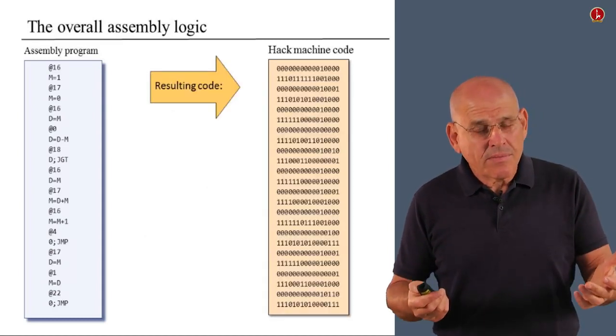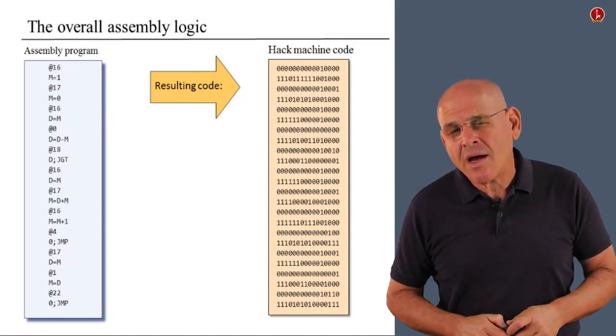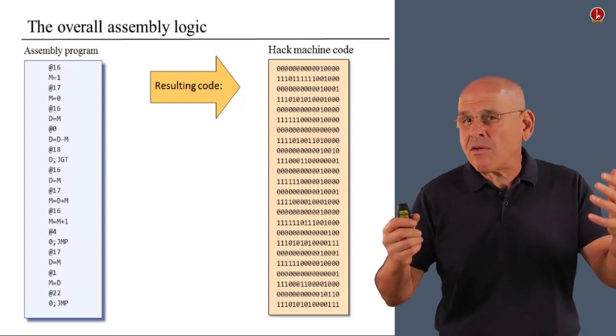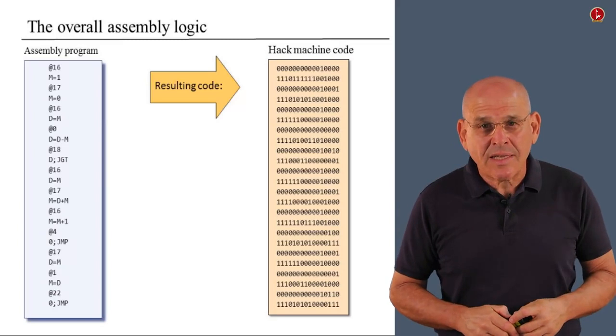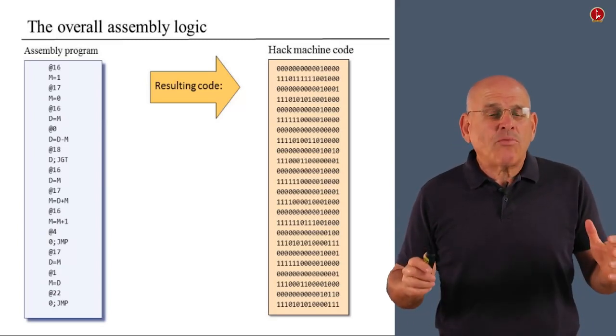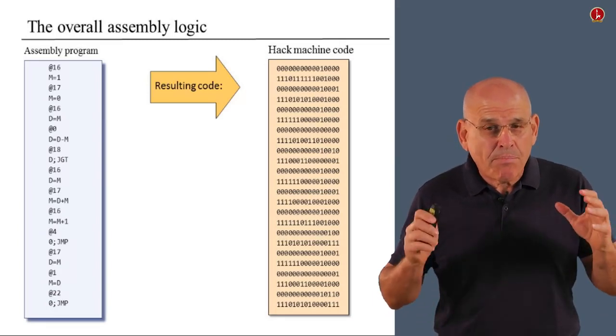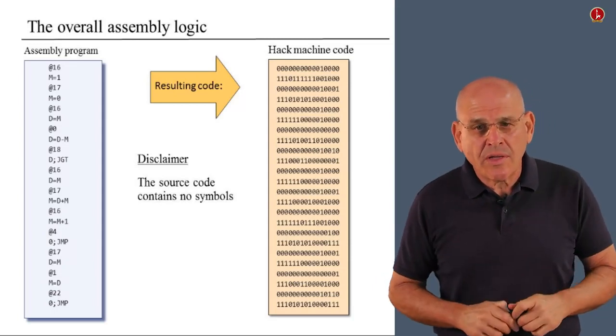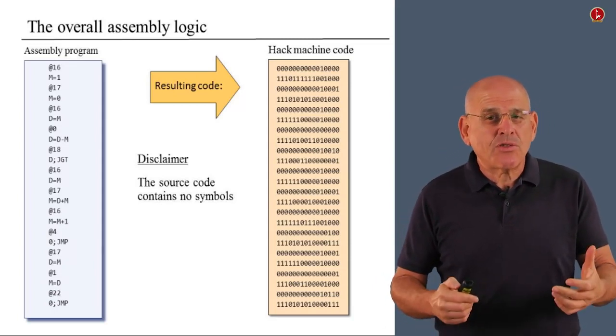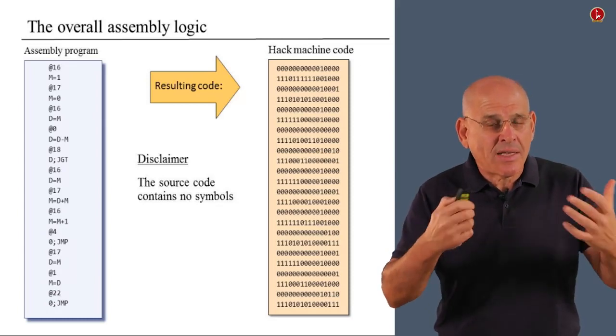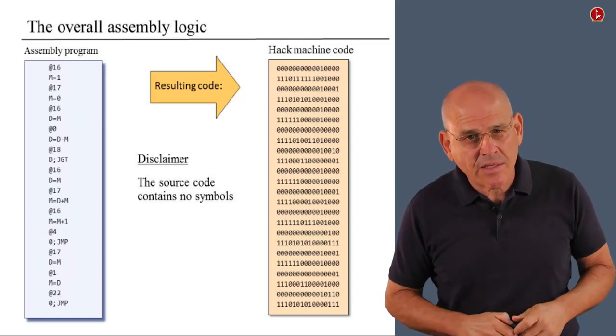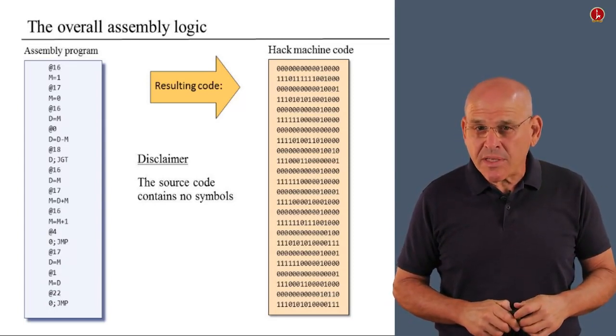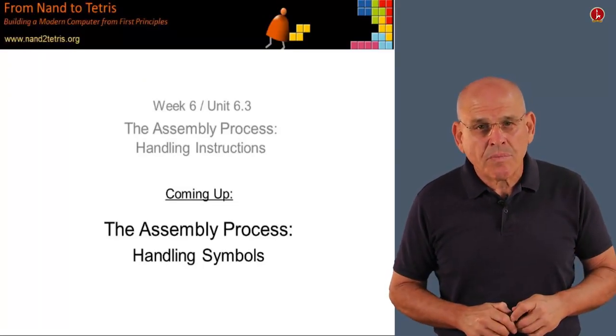If you do all this, then you will manage to create an assembler that can translate programs into binary code, and everything looks very nice indeed. And I'd hate to be a party spoiler, but there's a big gap that we haven't closed yet. And this is the fact that the source code contains no symbols. We have managed to design an assembler that translates symbol-less programs. But we still have to close this gap of dealing with symbols. And that's exactly what we're going to do in the next unit.